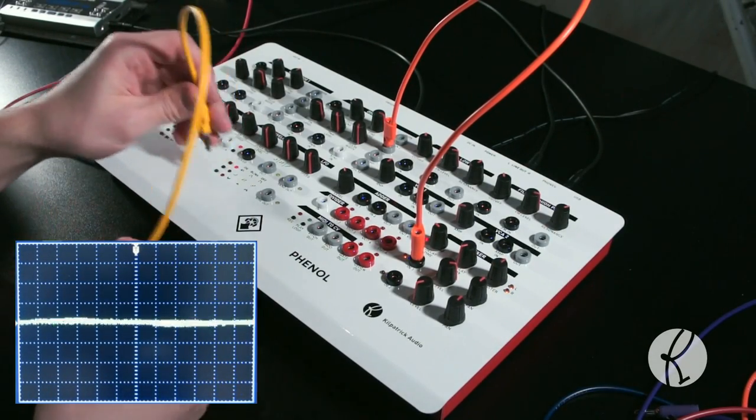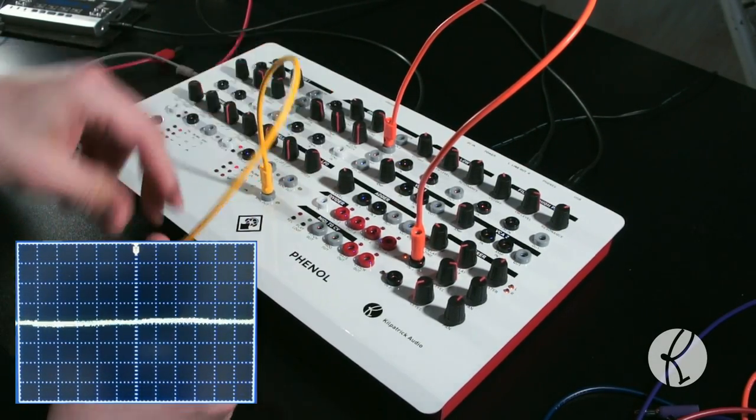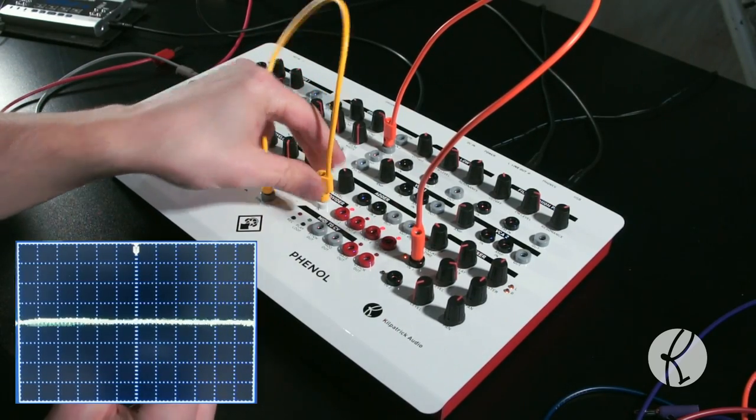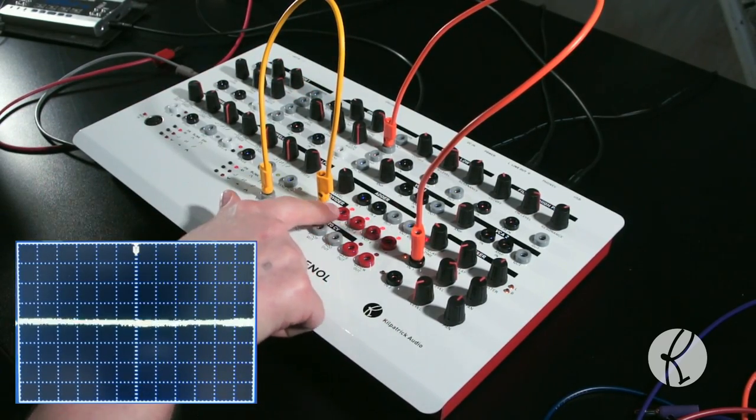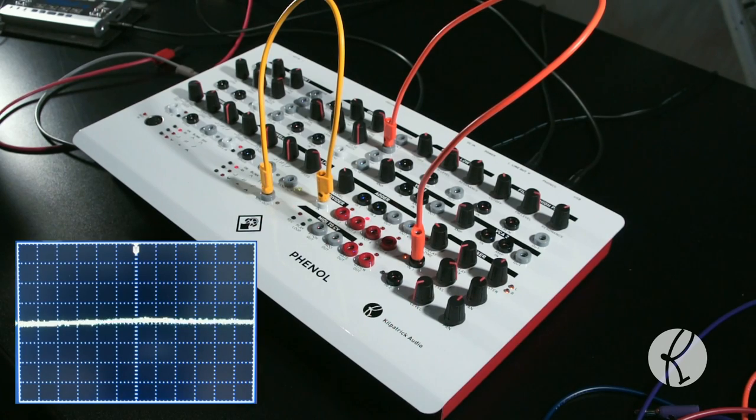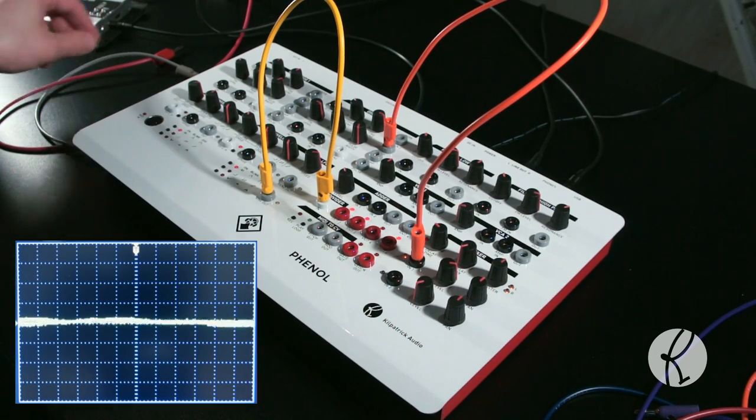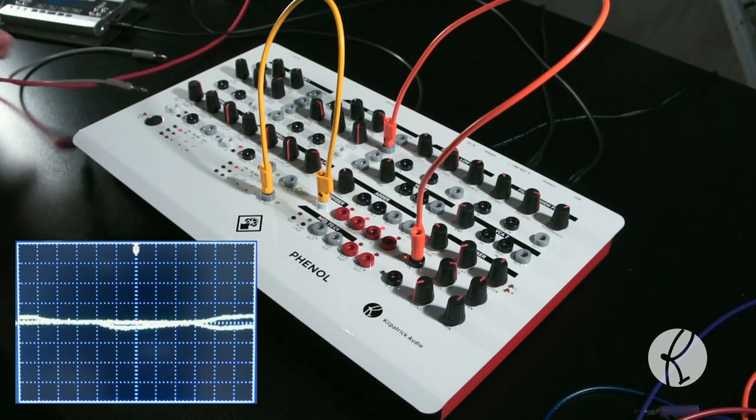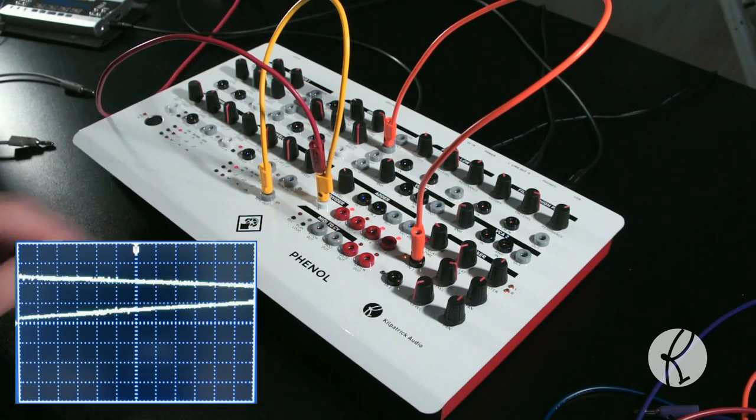The divider takes in any low frequency signal and creates four digital outputs. These outputs divide the input signal by 2, 3, 4, and 6 times to create different rhythmic divisions of the input.